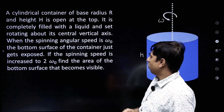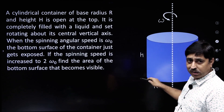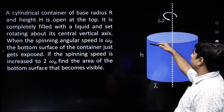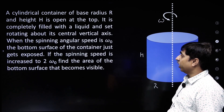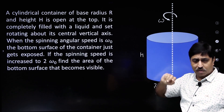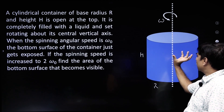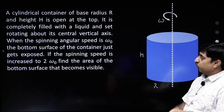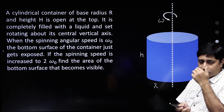This is the question. A cylindrical container of base radius r and height h is open at the top. The container is completely filled with a liquid and set rotating about its central vertical axis. When the spinning angular speed is omega naught, the bottom surface of the container just gets exposed.